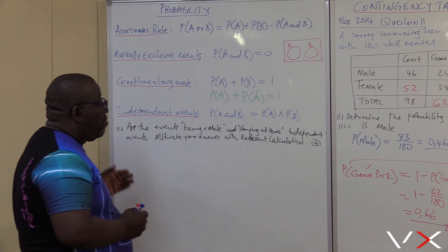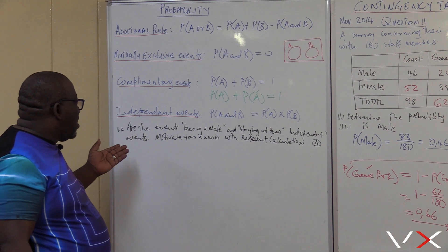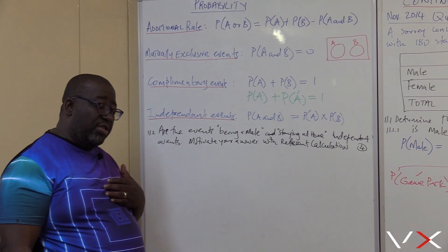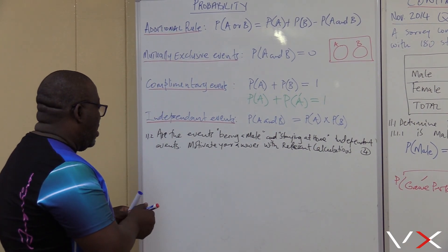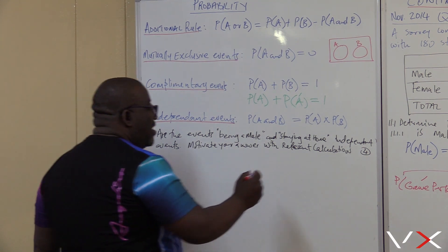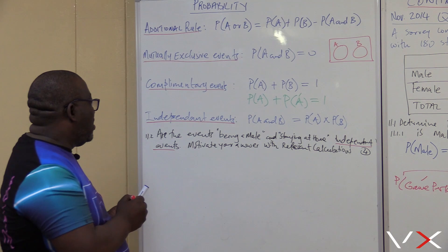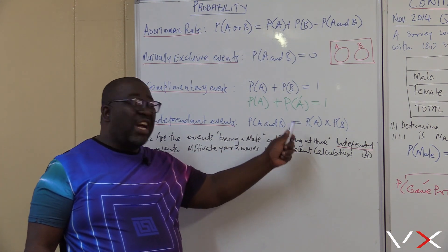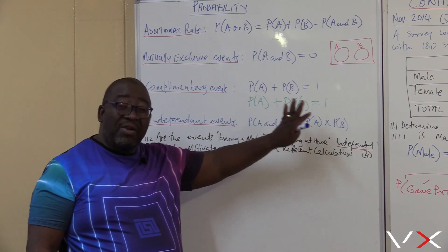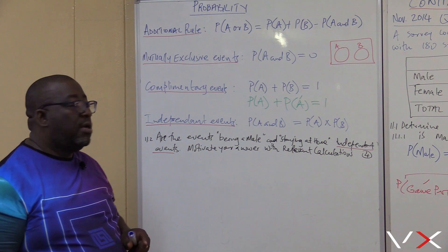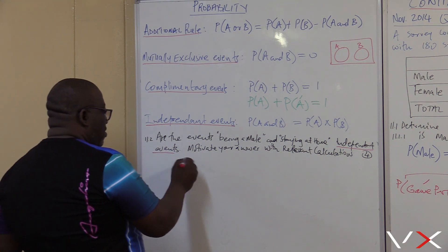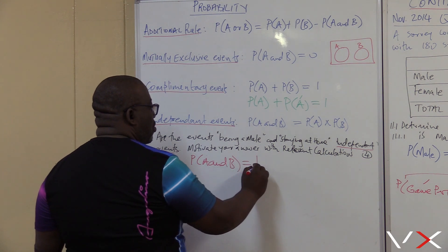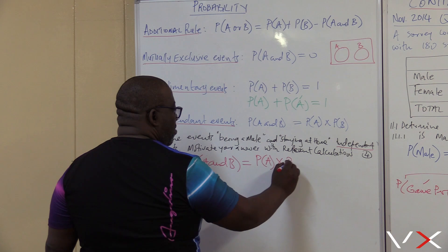Now let's go to the third problem, 11.3. The question says: are the events of being male and staying at home independent events? Motivate your answer with a relevant calculation. When we talk of independent events, the key is: for independent events, probability of A and B must be exactly equal to probability of A times probability of B. If these two are not the same, then the events will not be independent. So for independent events, the product rule states P(A and B) = P(A) × P(B).